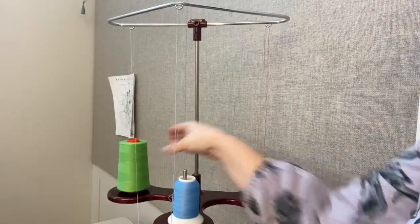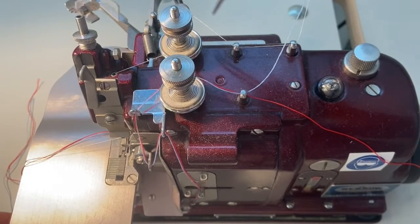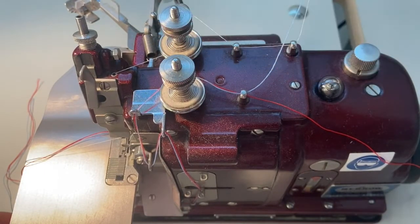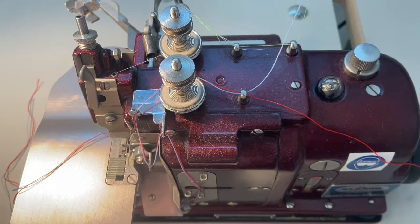Bring the top thread up through the thread guide on the cone stand and down towards the machine. Travel through a stationary thread guide, a second thread guide behind the tension plates, and then through the tension plates in a clockwise direction. You do not need to double wrap the thread for this tension plate.